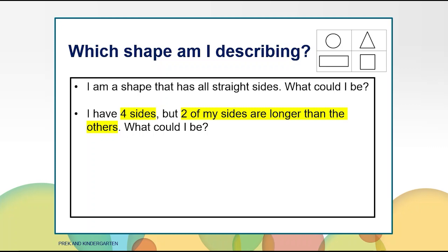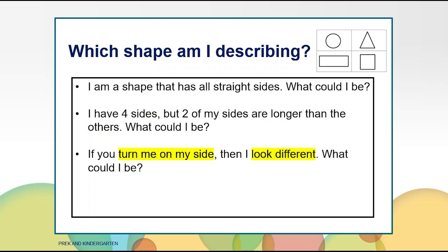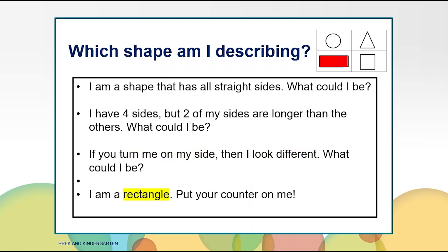Put your counter on the shape you think I am talking about. Here is the next clue. If you turn me on my side, then I look different. What could I be? Now that you have all the clues, decide if you want to keep the counter or move it. The answer is a rectangle. Put your counter on the rectangle. The rectangle has four straight sides but two of the sides are longer than the other two. Also, you can turn it on its side and it looks different.